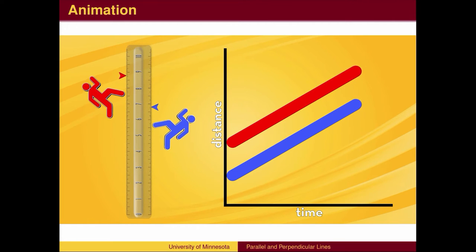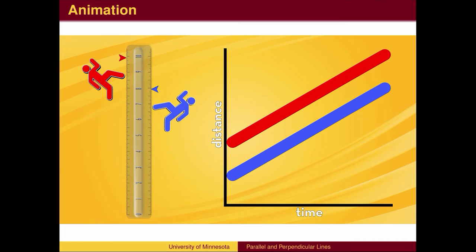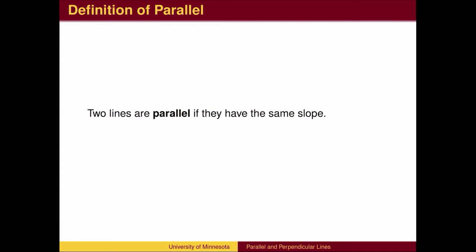In other words, the lines have to have the same slope. This leads to one definition of parallel lines. Two lines are parallel if they have the same slope.